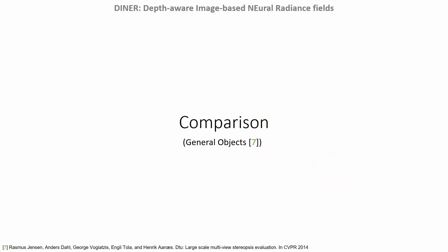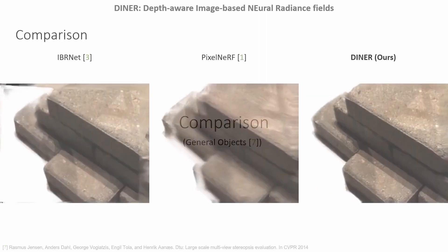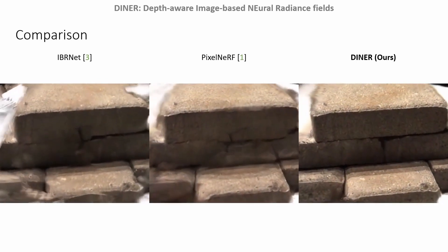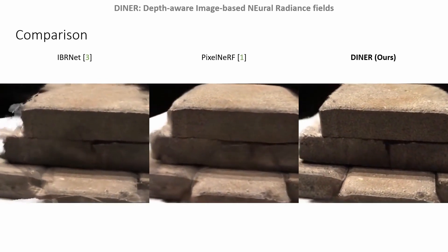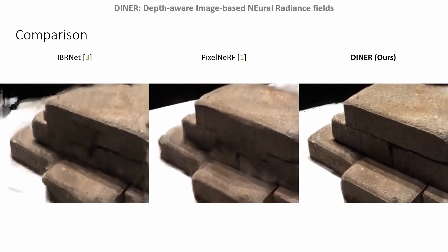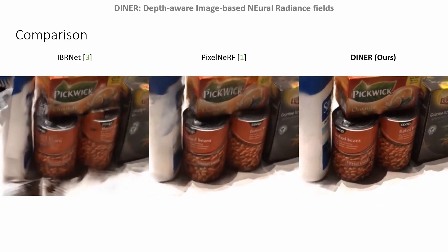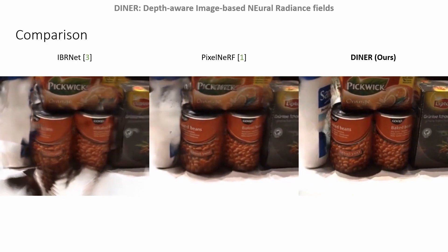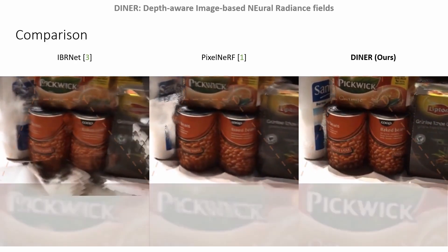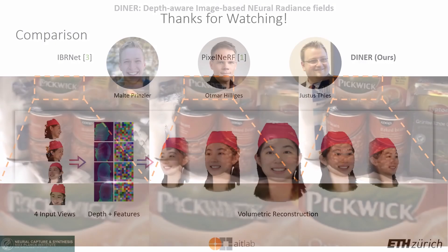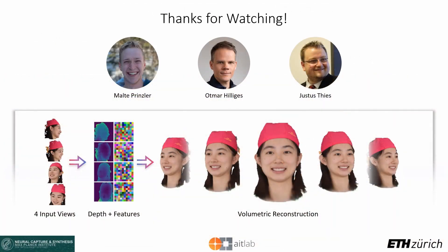Since depth maps are not bound to specific object classes, we can also evaluate our method on general objects. We observe that in this scenario, DINER estimates the scene geometry more plausibly and solves major artifacts during novel view synthesis. Ghosting effects are reduced and high-frequency textures are reconstructed more accurately.